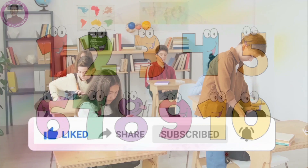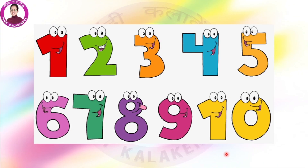Hello kids! You all must be knowing numbers and how to do counting. For example, this is 1, this is 2, 3, 4, 5, 6, 7, 8, 9 and 10. Today we are going to learn some numbers with many animals. So let's read the poem — One Little Kitten. First we'll read the poem and then understand it.